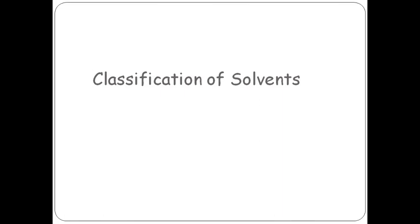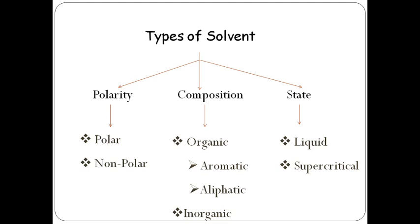Now our main important topic is classification of solvents. Solvents are broadly classified into three categories depending upon polarity, composition, and state. I will first discuss composition. Based on the components present in the solvent, we get classifications like organic and inorganic. Organic means compounds which contain carbon and hydrogen together, so if carbon and hydrogen or any organic functional group is present, that solvent is referred to as an organic solvent.